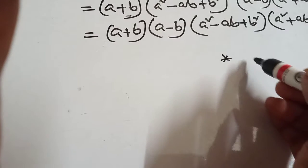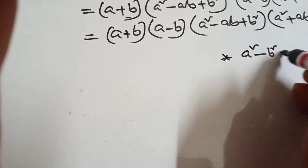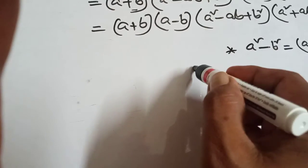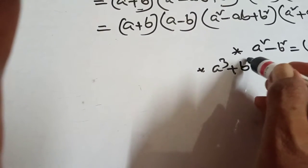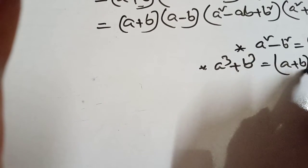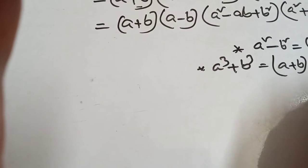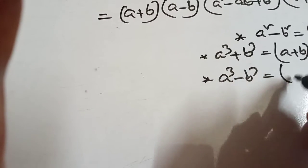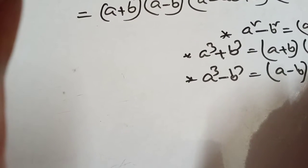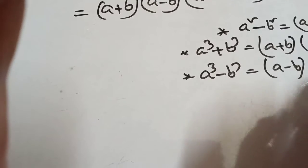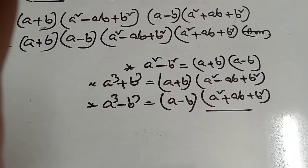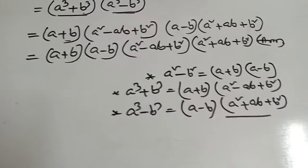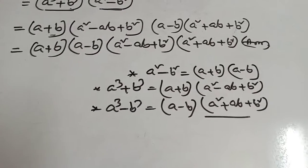You must remember these three formulas. First: A square minus B square equals A plus B into A minus B. Next: A cube plus B cube equals A plus B into A square minus AB plus B square. Next: A cube minus B cube equals A minus B into A square plus AB plus B square. These three formulas are most important.